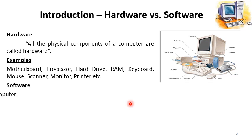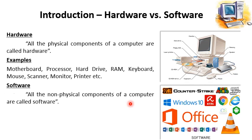Now, software is the opposite of hardware. All the non-physical components of the computer are called software. We can also define it as all the non-tangible components of a computer, or all those components which cannot be touched. These three definitions are valid and correct for defining software.